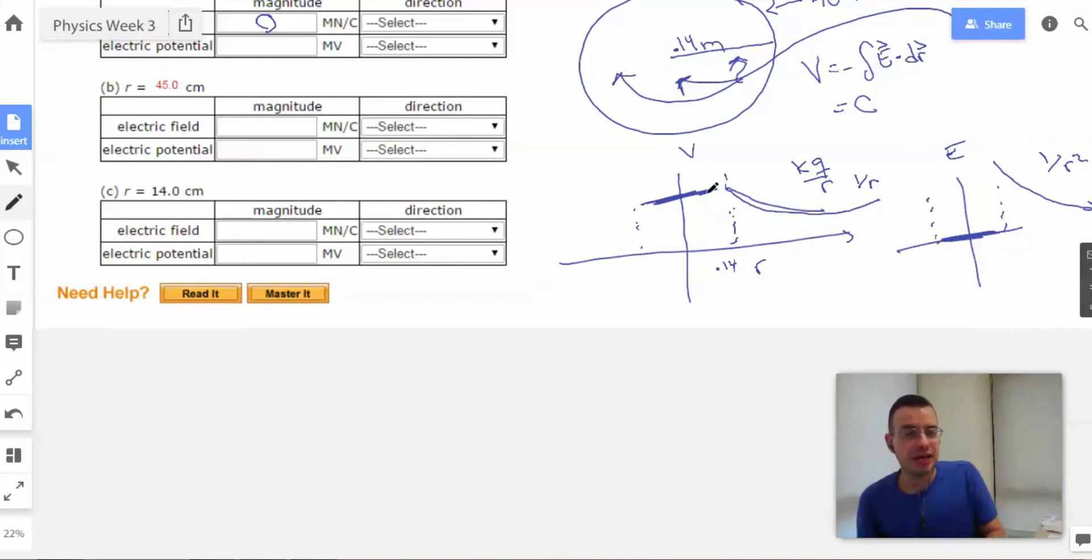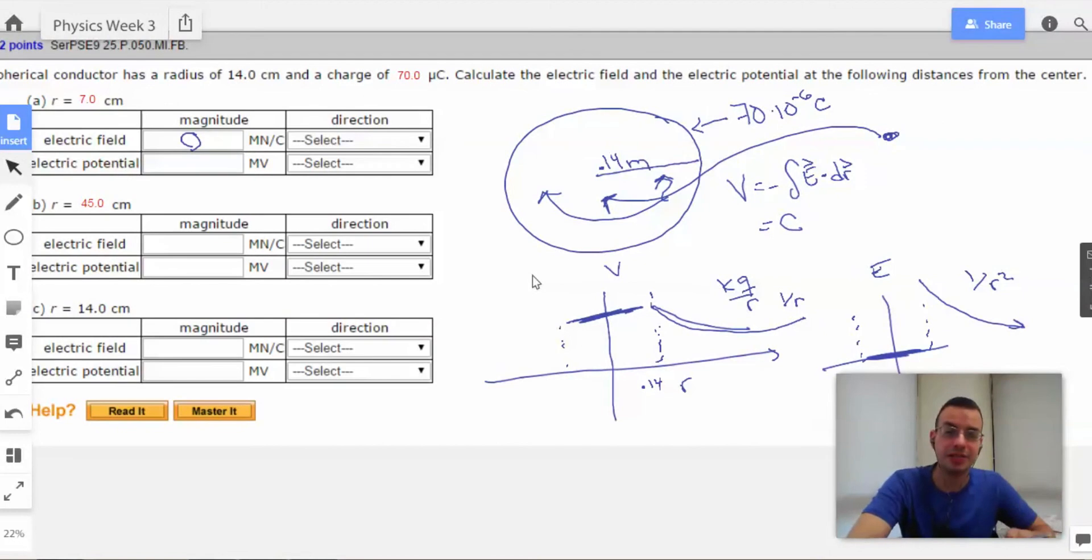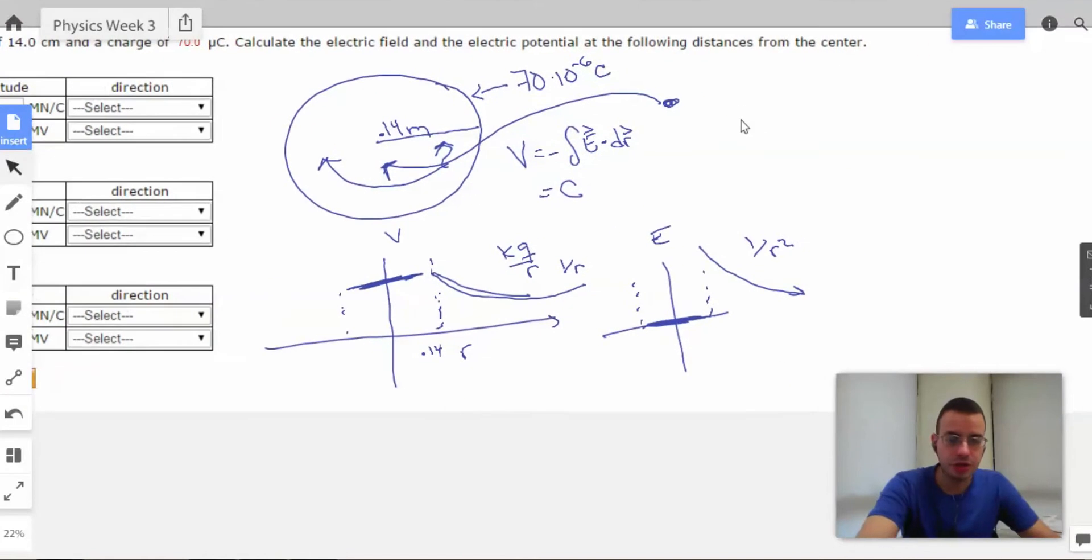So inside, we're going to have a constant potential. Constant, possibly not zero potential. So the way we're going to find that potential then, is we're going to find it at the edge of the sphere, which we know will be KQ over R.